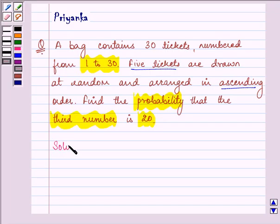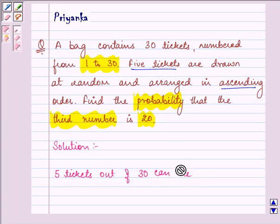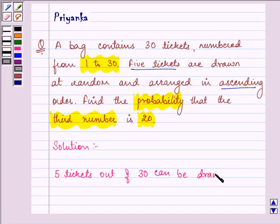So let's proceed with the solution. Now here, 5 tickets out of 30 can be drawn in 30C5 ways.